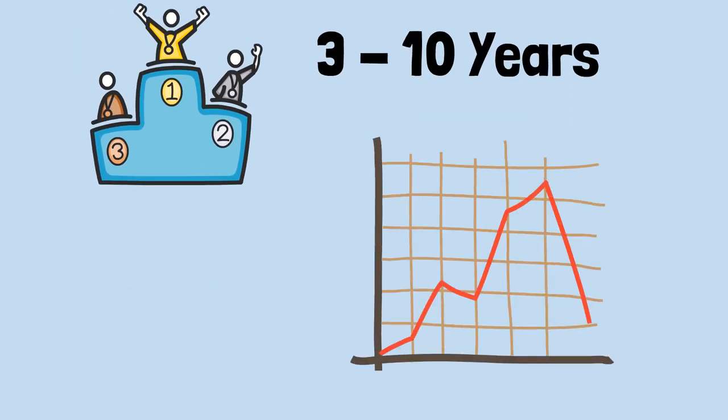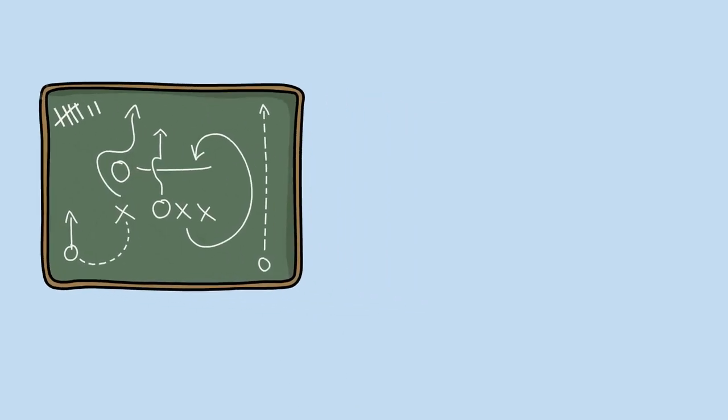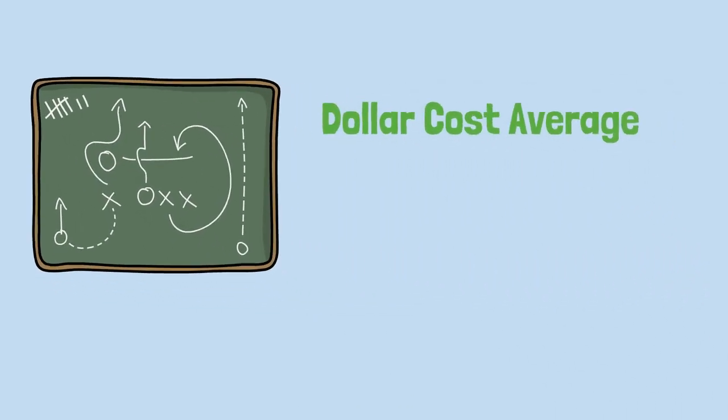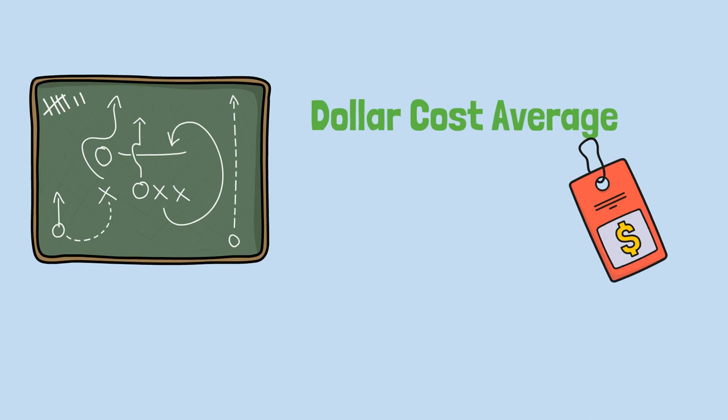Attempting to time the market to make a killing when it recovers is a dangerous trap that leads many down the path of financial ruin. A better strategy for the average investor is the dollar cost average, an approach that delivers the best average price over the long haul. The stock market is a long distance race, not a sprint.